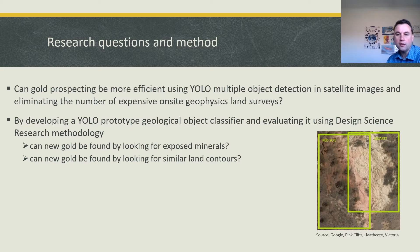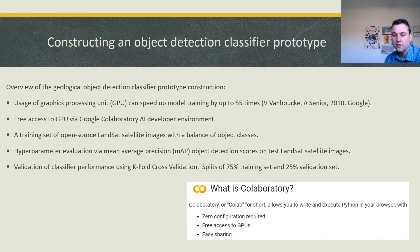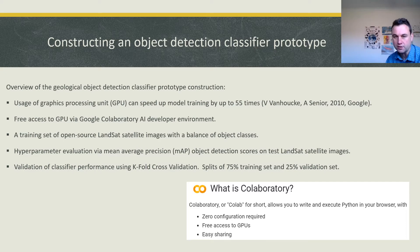Can we apply a predictive model over existing known gold discovery locations and on that basis look for similar environments where more gold may exist? How do you create such a predictive model? The online Google Collaboratory environment gives you free access to a graphics processing unit, which Google claims can speed up operations by a factor of 55 times.